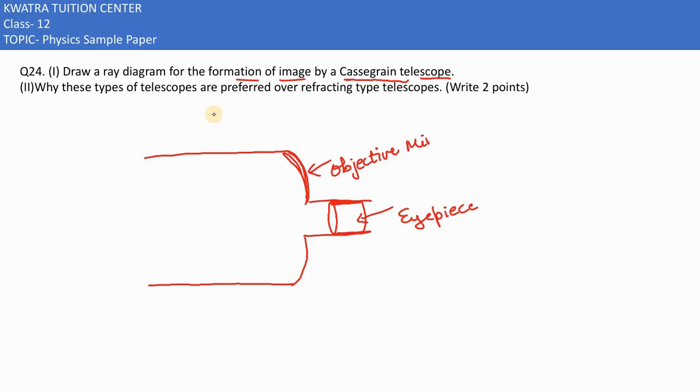And then I would have a secondary mirror within the telescope. This is my objective as well, upper wala bhi or niche wala bhi objective. Then in the center of it we need to draw a secondary mirror for the reflection purpose.